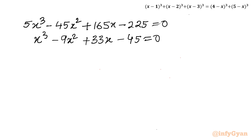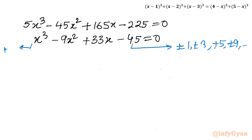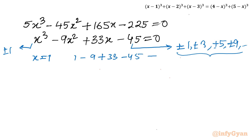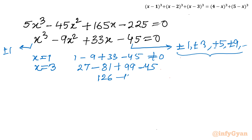Now this is our cubic equation. I will use the Rational Root Theorem (SDM) to find eligible factors: ±1, ±3, ±5, ±9, ±15, and so on. The leading coefficient is ±1, so the set remains the same. Testing x=1: 1−9+33−45 ≠ 0. Testing x=3: 27−81+99−45 = −126+126 = 0. So x=3 is our base solution.